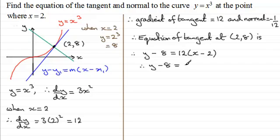Expand the bracket, and we would get 12x minus 24. And then I would add 8 to both sides, giving me y equals 12x, and minus 24 plus 8 is minus 16.